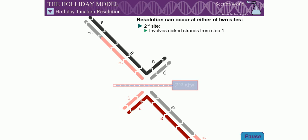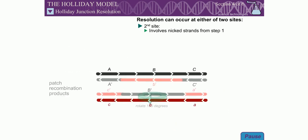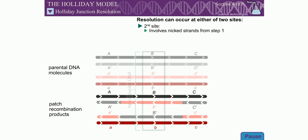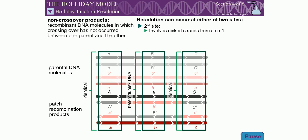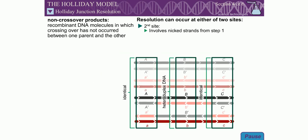The resulting duplexes are called patch recombination products because they contain a patch of hybrid DNA. Since the A and C alleles are still present together on one of the product DNA duplexes, these products are also called non-crossover products.